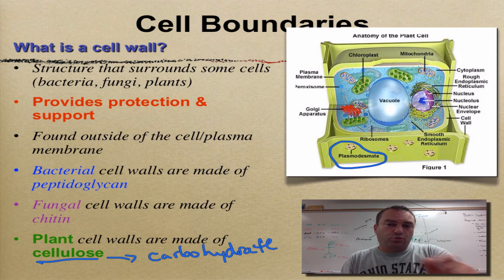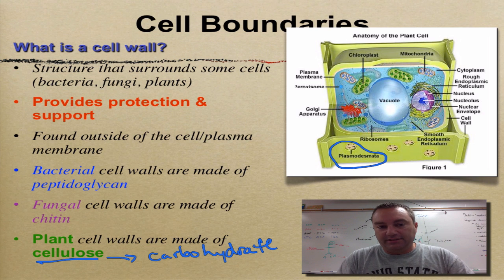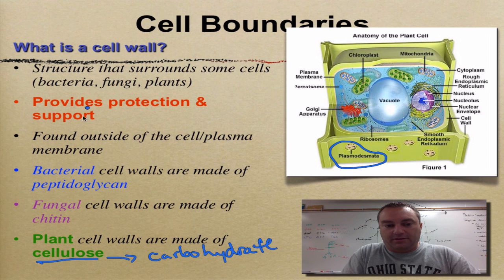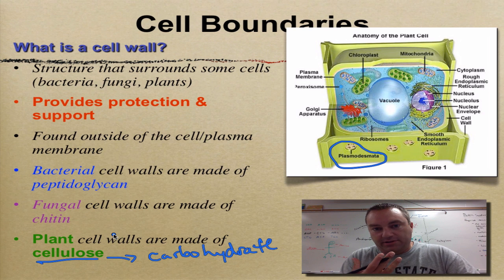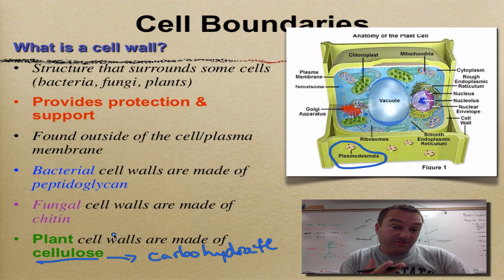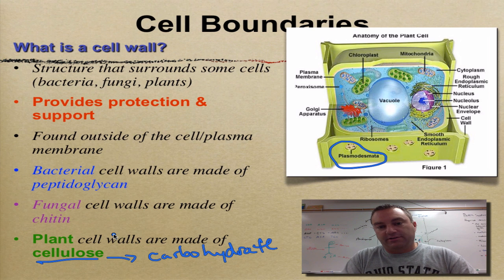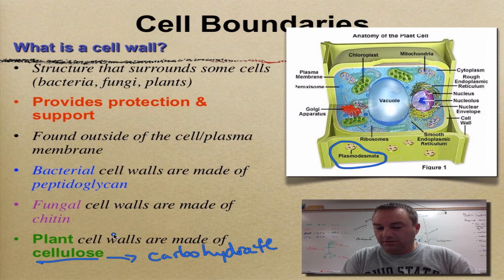This is a really short episode because it just covers these things, so make sure that you pay attention. Remember, anything in color means it could be on a test or a quiz, so review this one again. Bacteria cells have cell walls made out of peptidoglycan. Fungus cells have theirs made out of chitin. And plant cells are cellulose. Until the next time, catch you on the flip side.